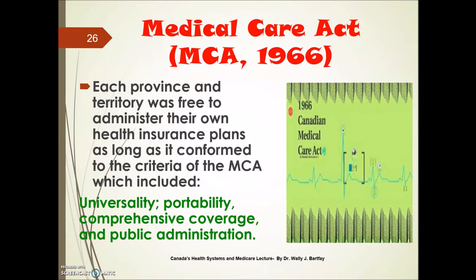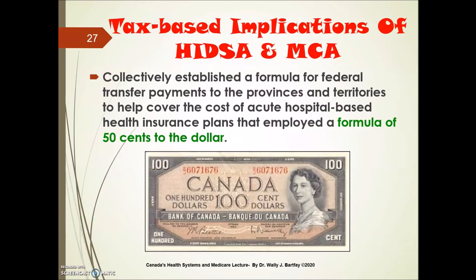The Medical Care Act of 1966 stated that each province and territory was free to administer their own unique health insurance plans as they deemed appropriate, as long as it conformed to the criteria of the MCA, which included these critical elements: it had to be universal, portable, had to have comprehensive coverage, and of course, public administration. Collectively, the HIDSA and the Medical Care Act established a formula for federal transfer payments to the provinces and territories to help cover the cost of acute hospital-based health insurance plans, employing a formula of 50 cents to the dollar.